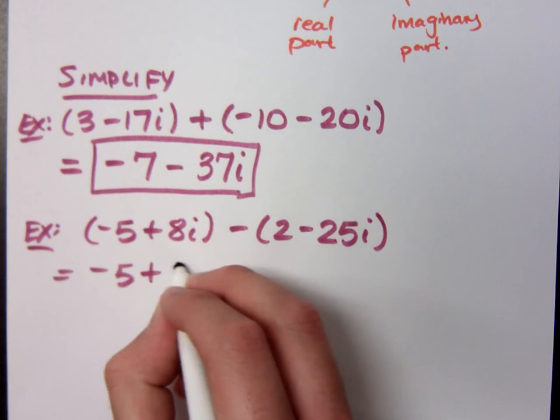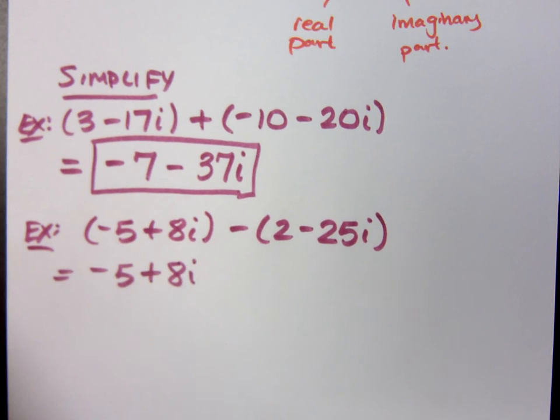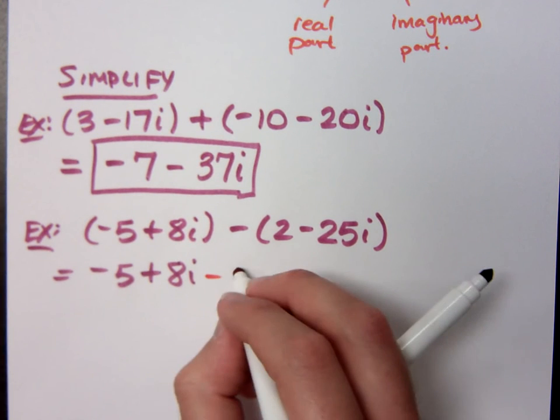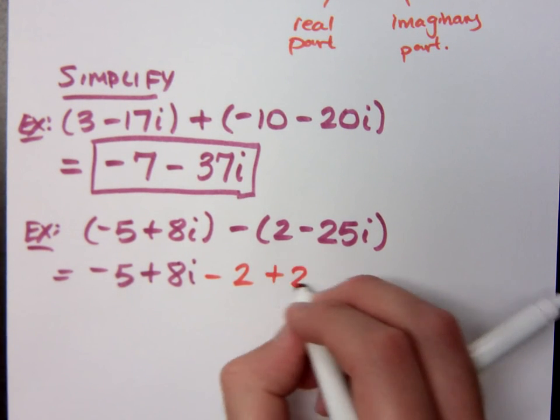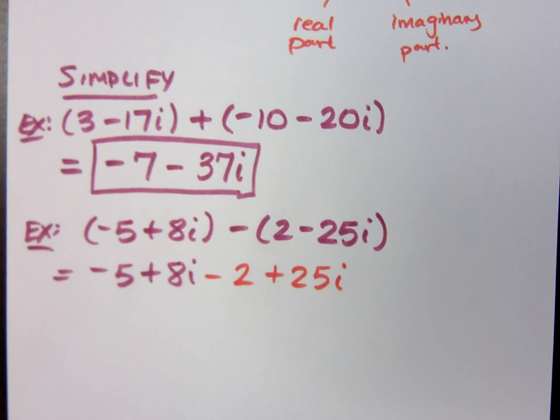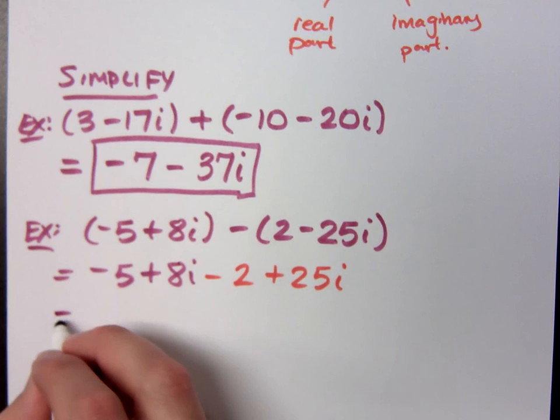Now, some of you may not need to rewrite this to distribute the negative, but I will just to help you guys out, especially if you're following along over the World Wide Web. Did I distribute the negative correctly? Yes. Now we just need to do what? Combine like terms, and what do we get?